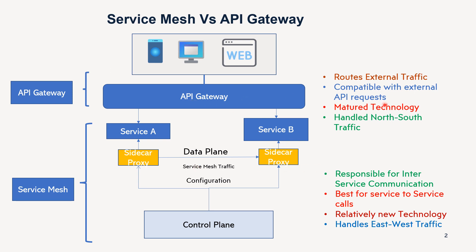The API Gateway is a mature technology — it has been here for a while. But Service Mesh is kind of a new technology, though it is well established. Maybe it still needs some more enhancements. Traffic-wise, the traffic handled by the API Gateway can be called north-south traffic because it handles traffic from clients. But in the case of Service Mesh, it handles east-west traffic — between the services.